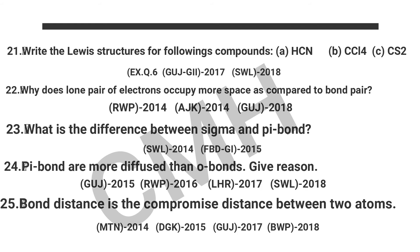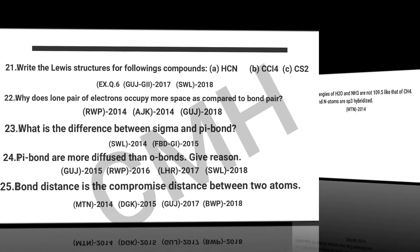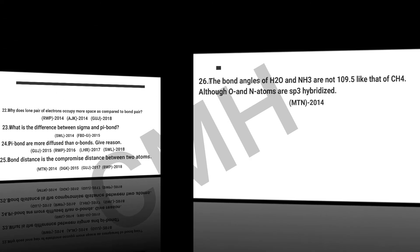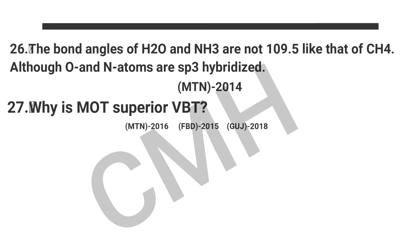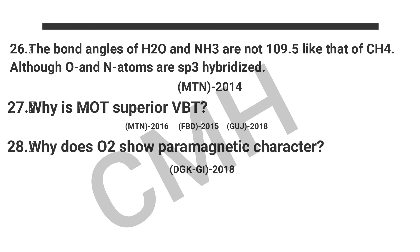Question number 25: Bond distance is the compressed distance between two atoms. Question number 26: The bond angles of water and ammonia are not 109.5° like that of methane, although oxygen and nitrogen atoms are sp3 hybridized — explain.